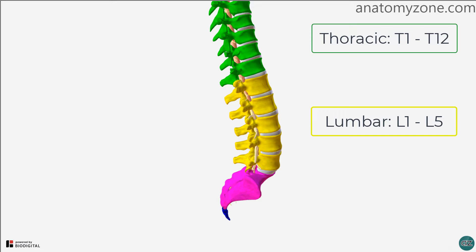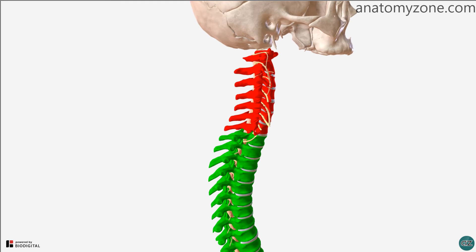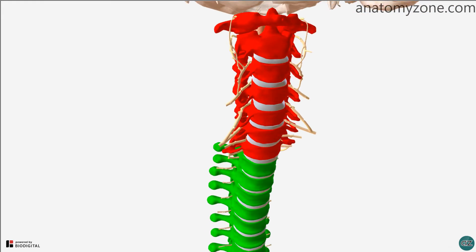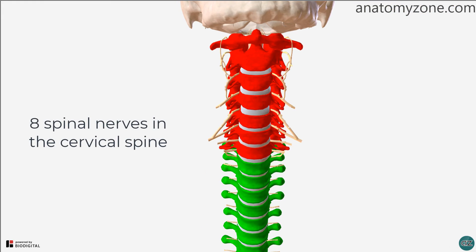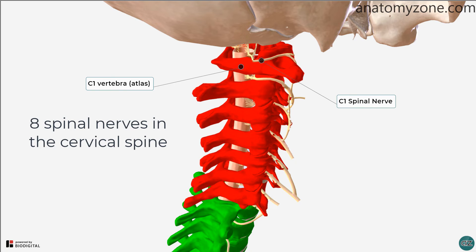With regard to the spinal nerves, these are named according to the level at which they exit the vertebral column. Within the cervical spine, although there are only 7 vertebrae, there are actually 8 spinal nerves. You can see how the first cervical spinal nerve exits above the first cervical vertebra, C1.